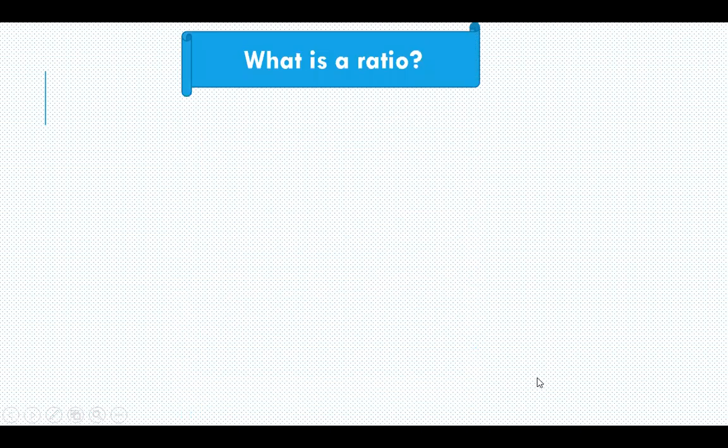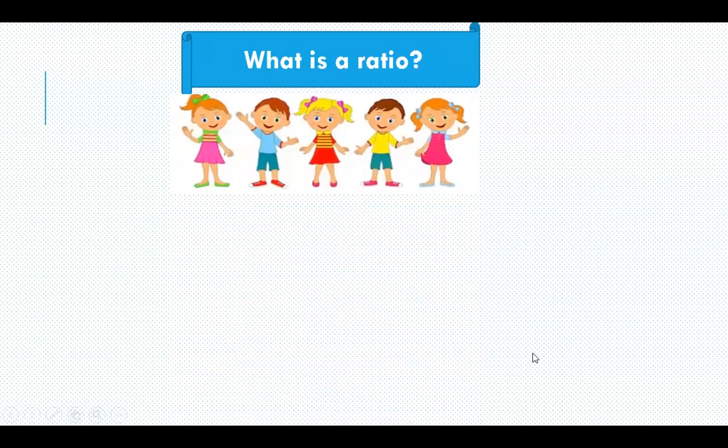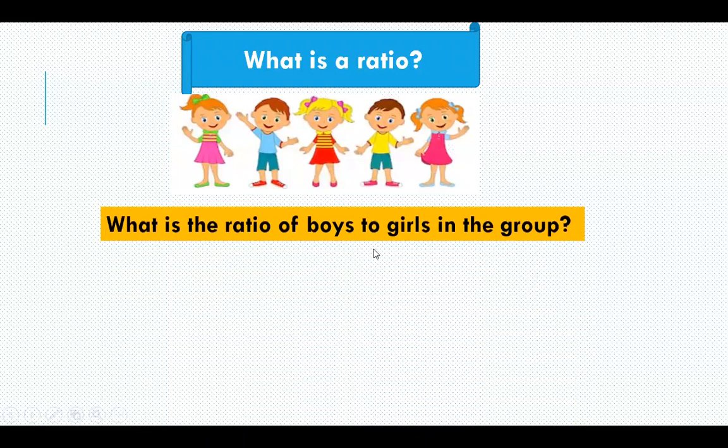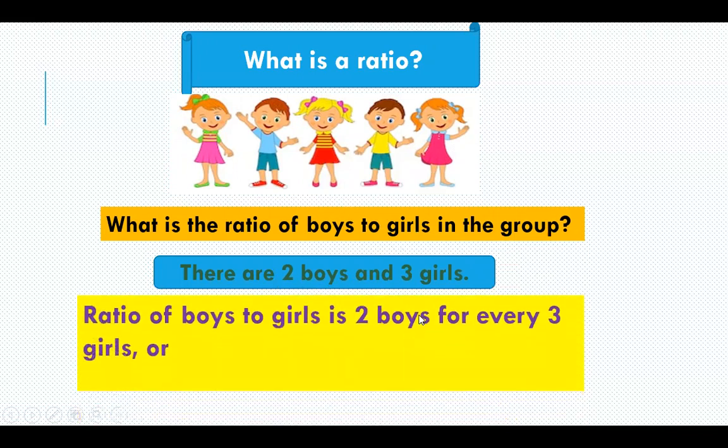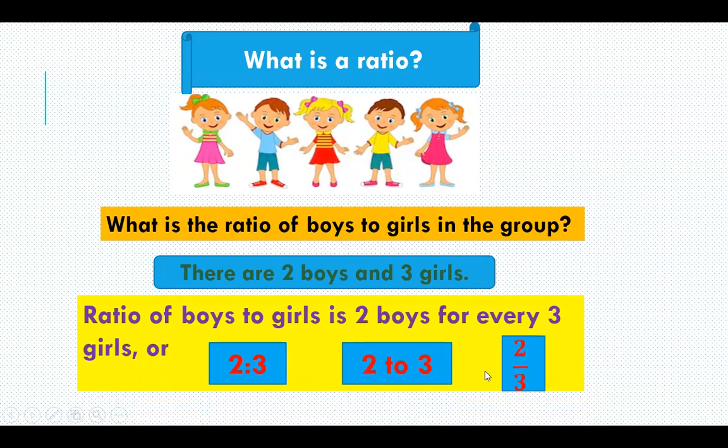What is the ratio of boys to girls in the group? Count the number of boys and girls and find out the ratio. There are two boys and three girls. So, the ratio of boys to girls is 2 boys for every three girls, or we can say 2 is to 3, 2 to 3, or 2 by 3.